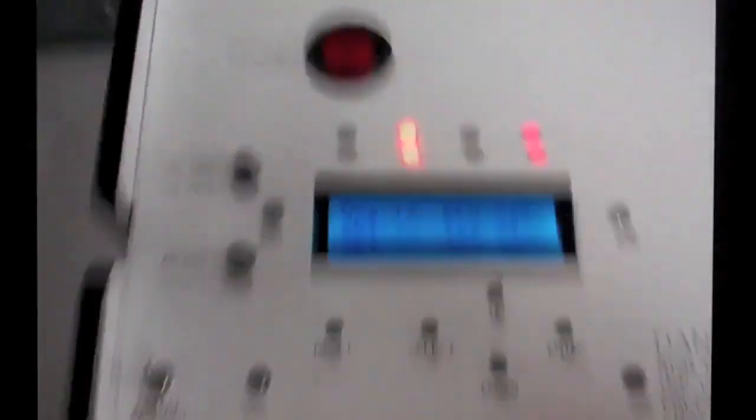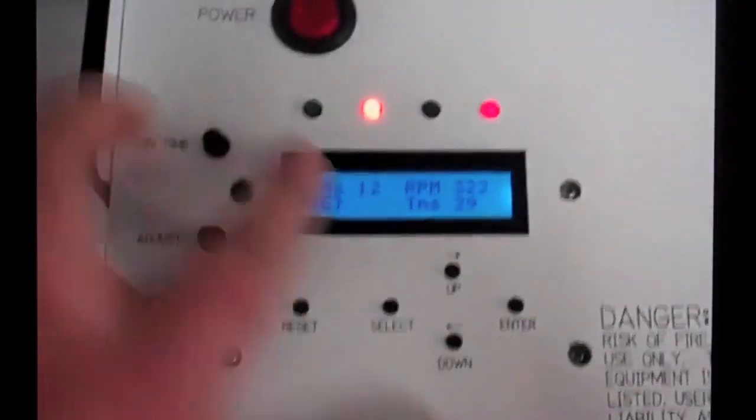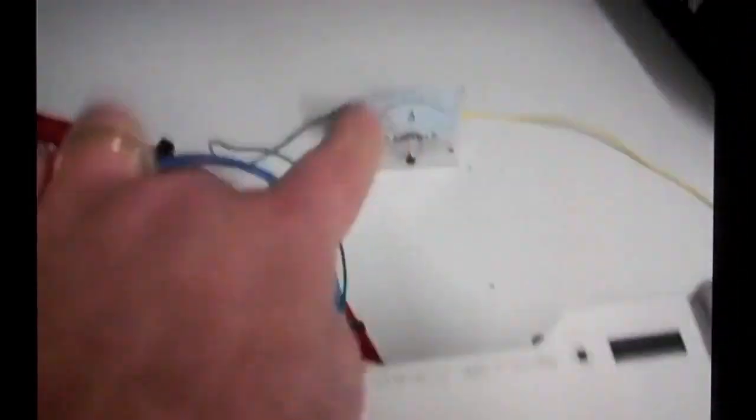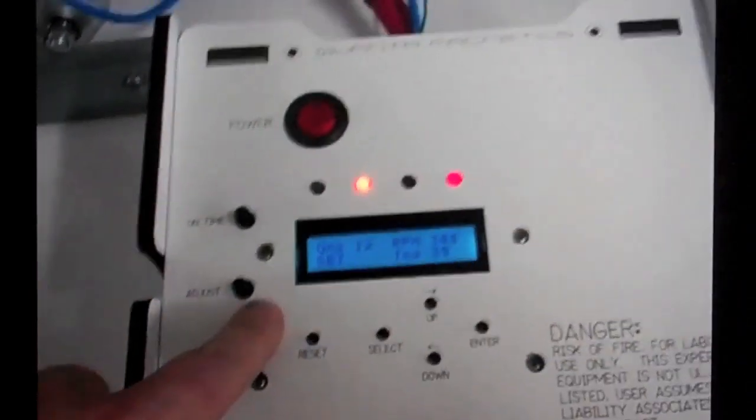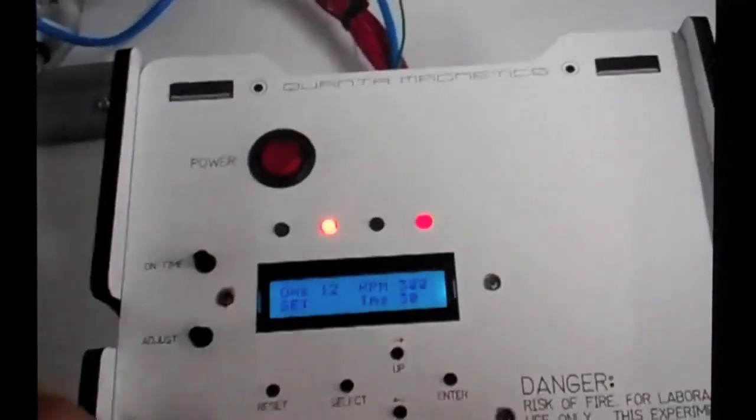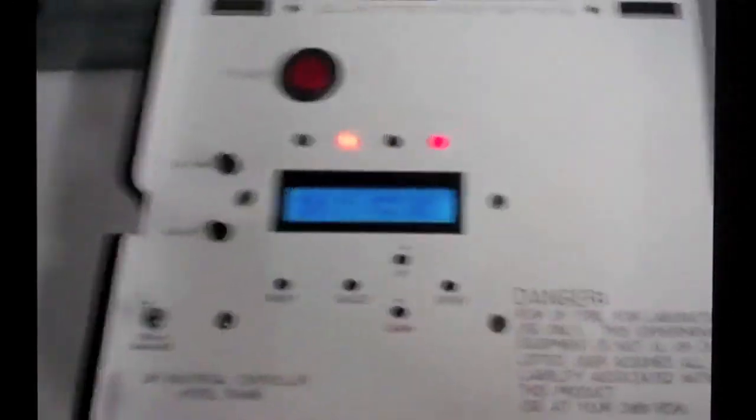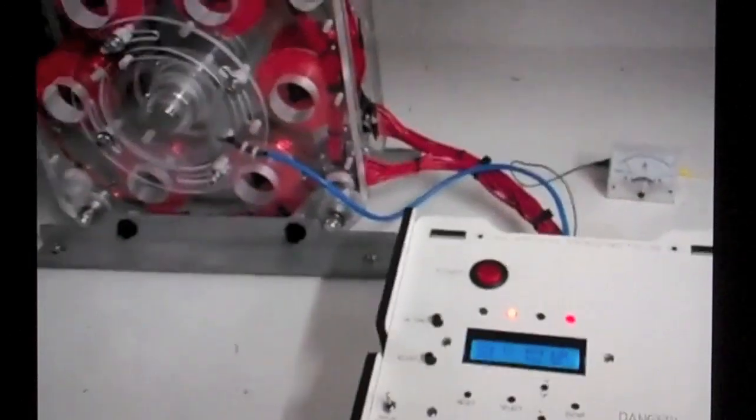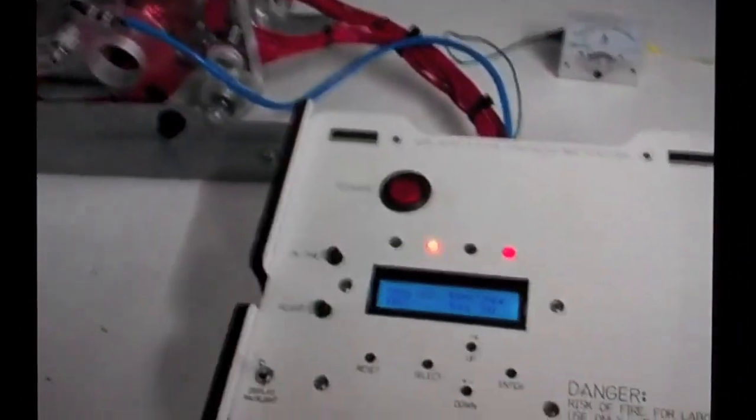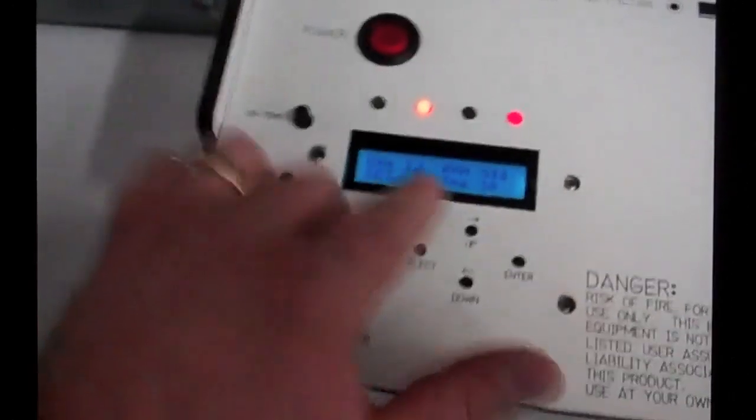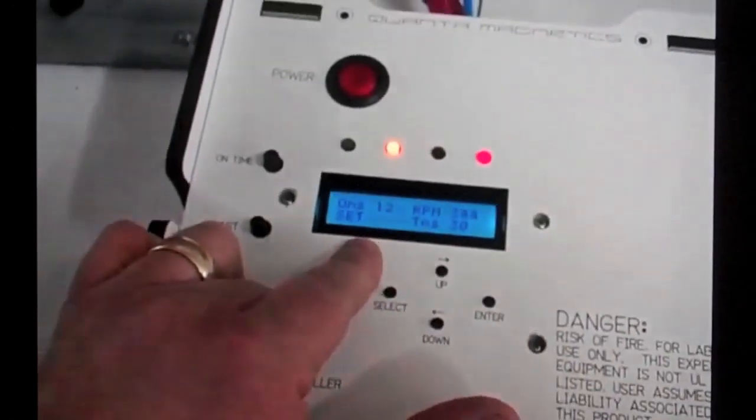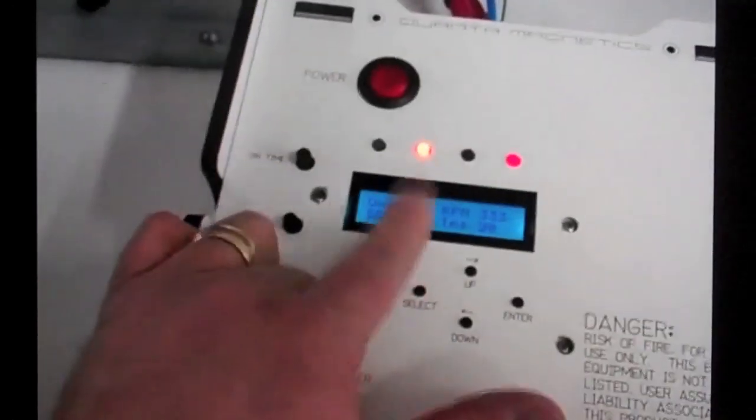So what we do is when we get our settings where we like them—that's happening first of all because the control is updating the LCD display, and better programming will fix this in the near future as I push this out into the community to help solve. But anyways, once you have the settings where you want them, you simply push the select button.